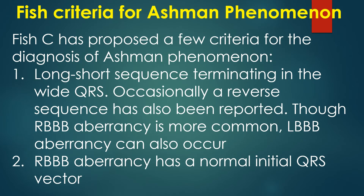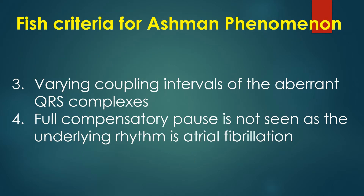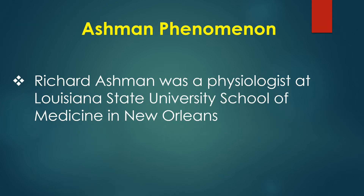Fisch proposed criteria for the diagnosis of Ashman phenomenon: (1) a long-short sequence terminating in the wide QRS, with RBBB aberrancy being more common though LBBB aberrancy can also occur; (2) RBBB aberrancy with normal initial QRS vector; (3) varying coupling intervals of the aberrant QRS complexes; (4) no full compensatory pause as the underlying rhythm is atrial fibrillation. Richard Ashman was a physiologist at Louisiana State University School of Medicine in New Orleans.